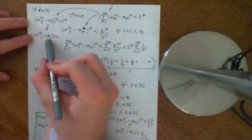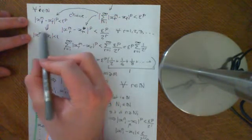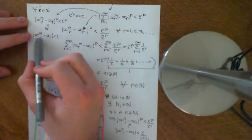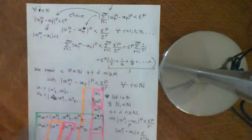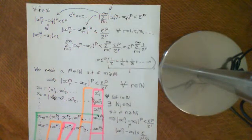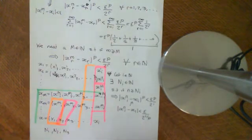And I cannot necessarily find you a big M, which is an element of the natural numbers, such that if you take a sequence x_m, and ask what is the modulus of the i-th term of that m-th sequence minus the i-th term of the termwise limit sequence, I cannot necessarily assure you that that's going to be less than epsilon for all i's as elements of the natural numbers.